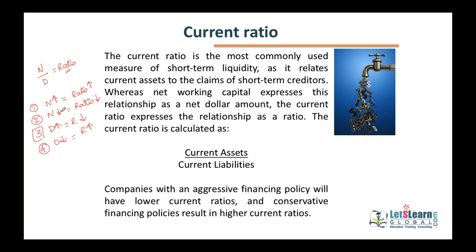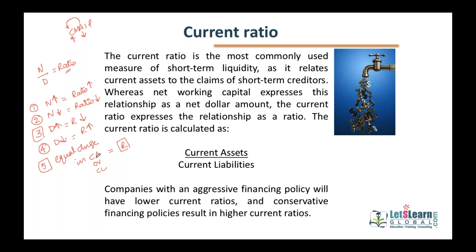There is also a fifth point: equal change in both numerator and denominator means the ratio does not change. For example, within current assets (CMAIP), if we collect from a customer, cash balance increases and accounts receivable balance decreases - equal change is taking place only in the numerator. If you have a change in either current assets or current liabilities equally, the ratio does not change.